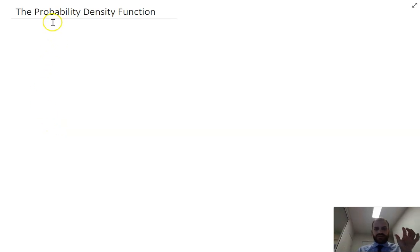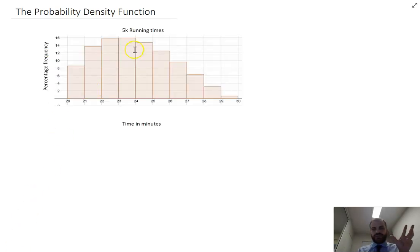We're going to look at the probability density function, which is an incredibly important idea in mathematics. Let's jump straight into an example. I have some runners at my school running 5Ks. Some are really fast, running it in between 20 and 21 minutes. About 8.5% of students do that. On the other end of the spectrum, less than 1% of students are running between 29 and 30 minutes. So this is a histogram, a probability histogram that you would be fairly familiar with.